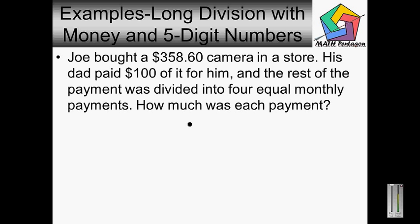Okay, here is a little word problem. Joe bought a three hundred fifty-eight dollar and sixty cent camera in a store. His dad paid one hundred dollars of it for him, and the rest of the payment was divided into four equal monthly payments. How much was each payment? So first we would subtract three hundred fifty-eight dollars and sixty cents minus the hundred dollars his dad gave him.